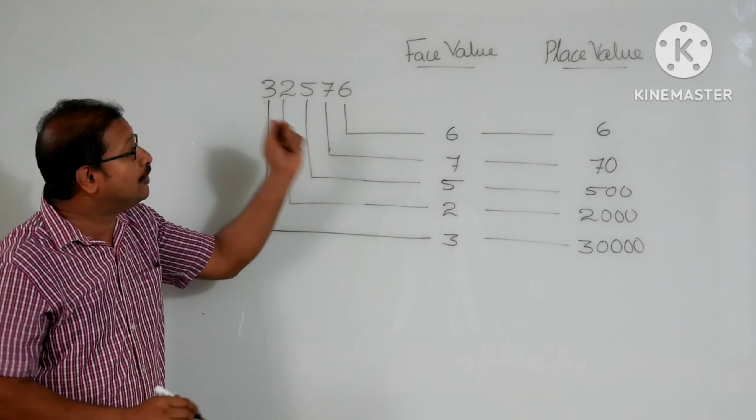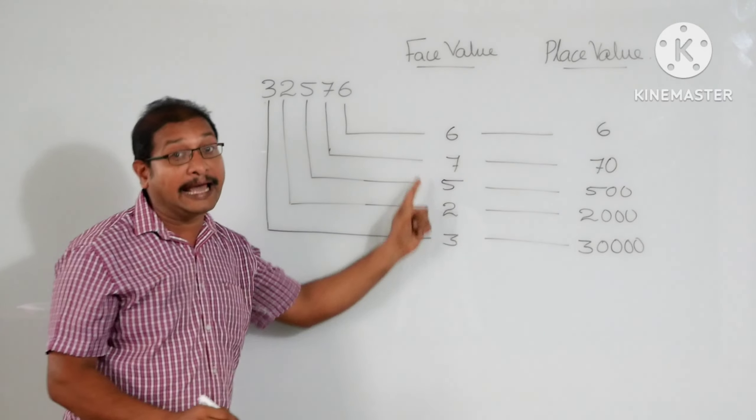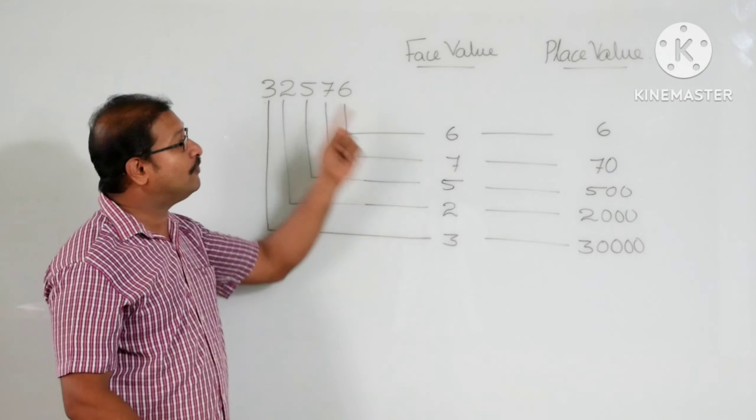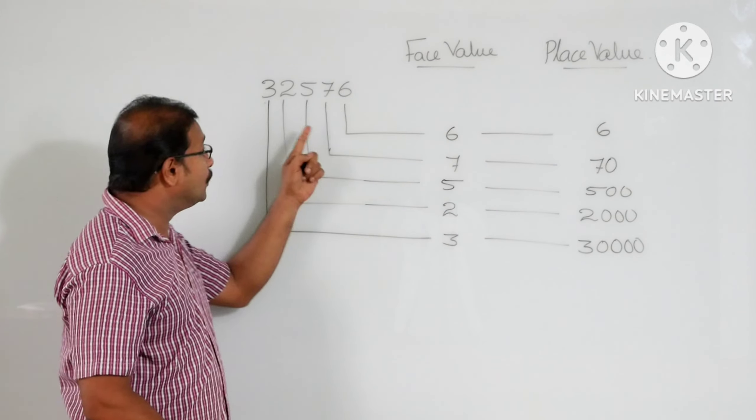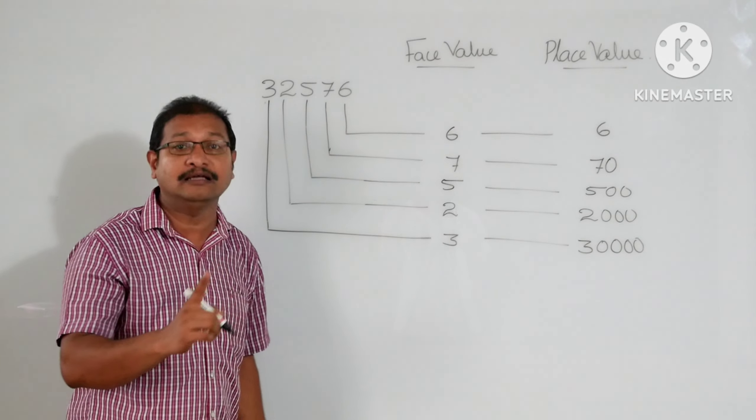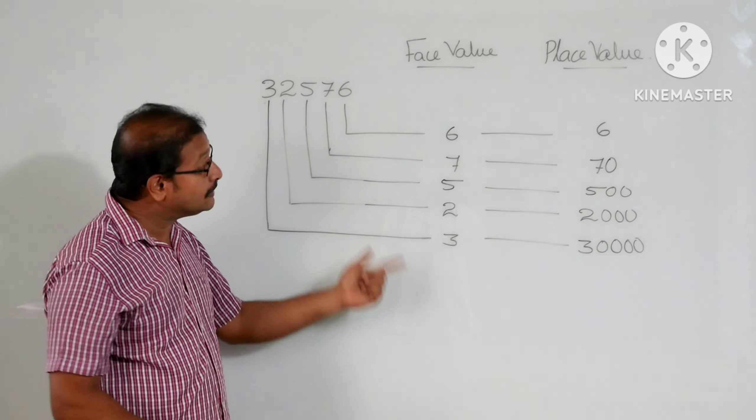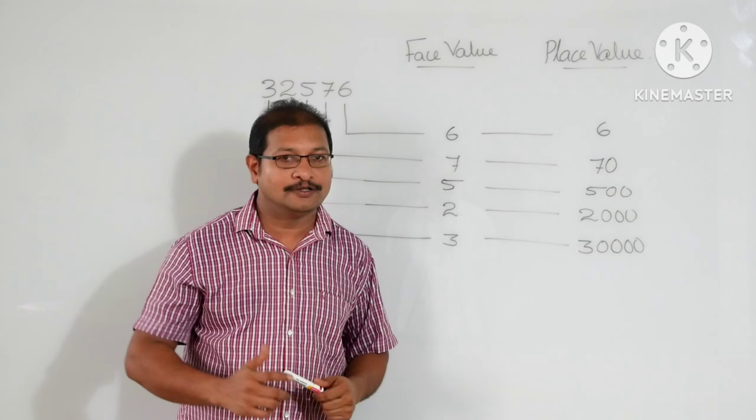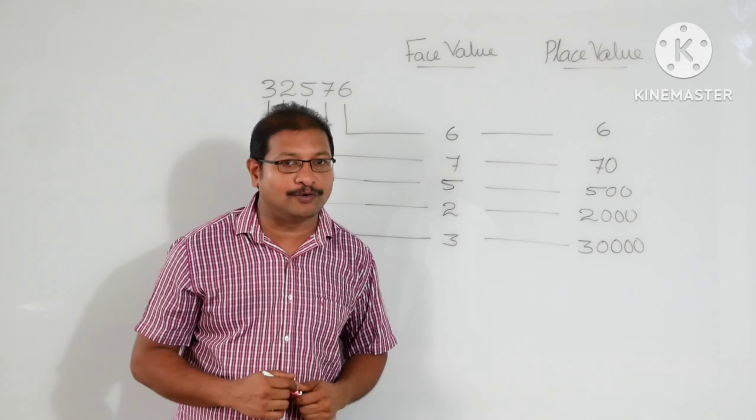So when you come to the face value, direct will keep the digit. But when it comes to the place value, first we will write the digit. After that, how many digits are there after the digit. Isn't it? That will be 0's. So to get such videos, stay tuned.